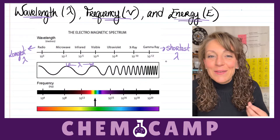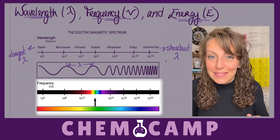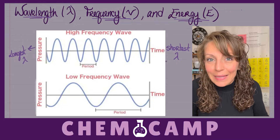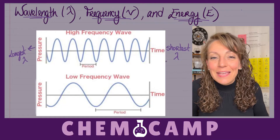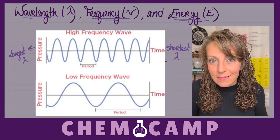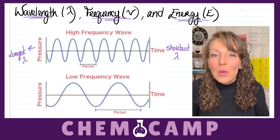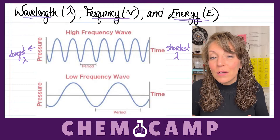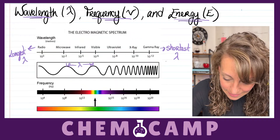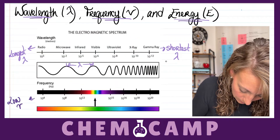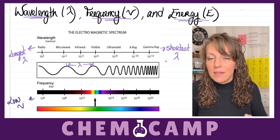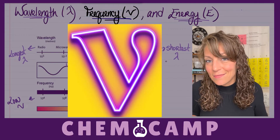Any wavelength can be related to a frequency, where frequency measures how frequently a wave — or a crest or trough of the wave — passes a particular point. So when you have a longer wavelength, then you have a lower frequency. Frequency is represented by the Greek letter nu and looks like a fancy v.